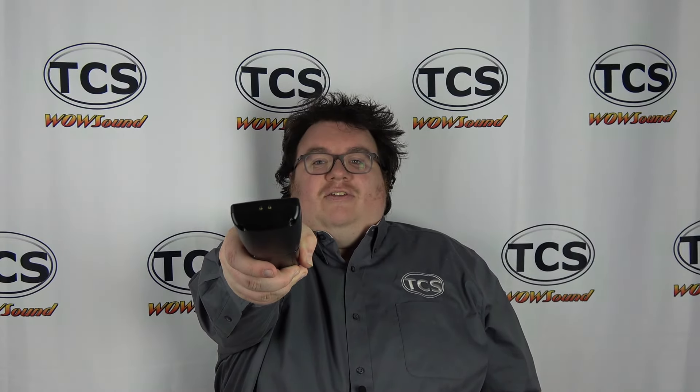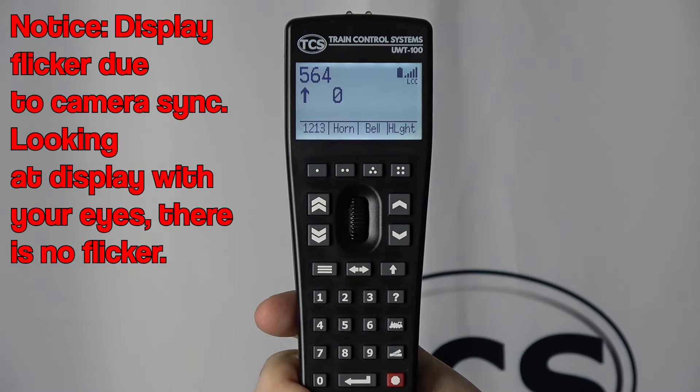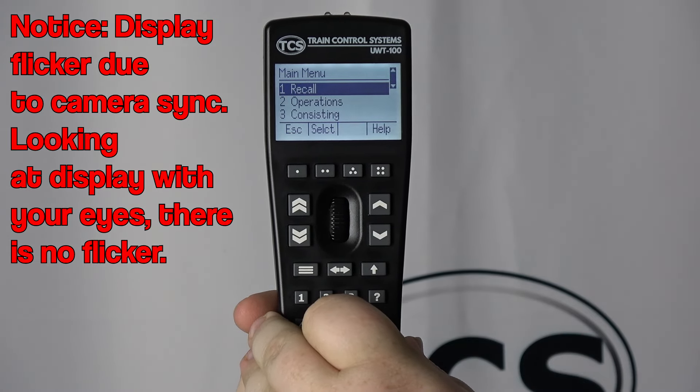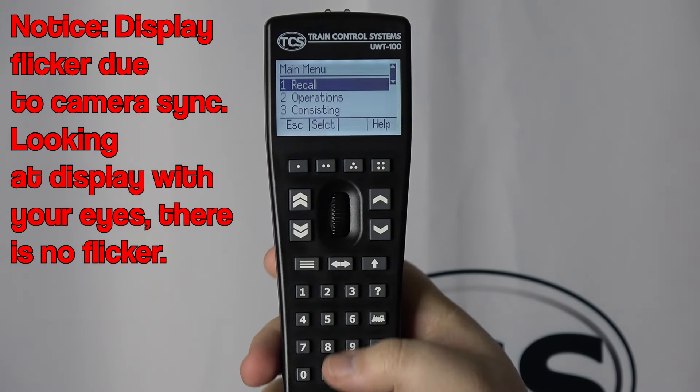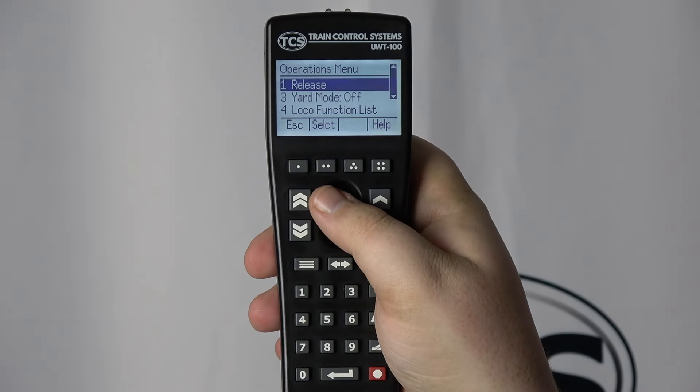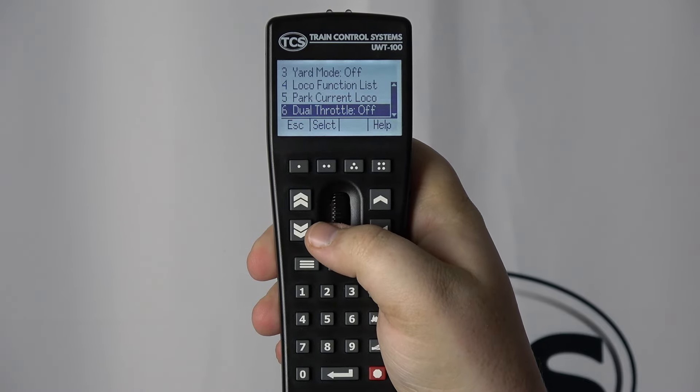Let's get started. With the throttle powered on, press the menu button. Then scroll to operations or press button two. Next, scroll to dual throttle or press button six, which will toggle dual throttle mode on or off.